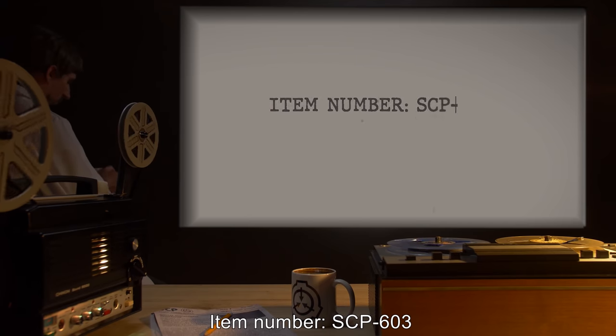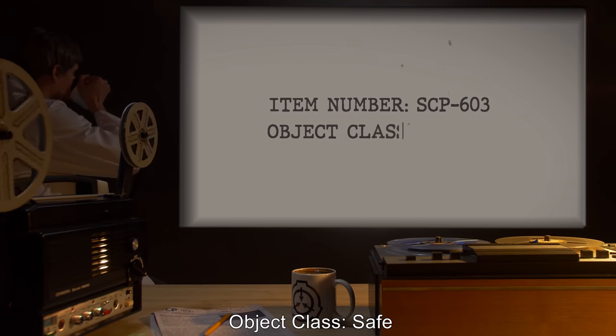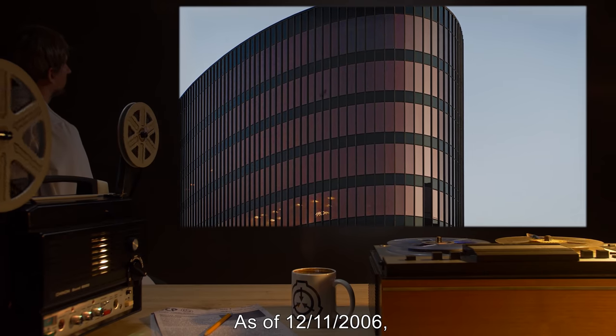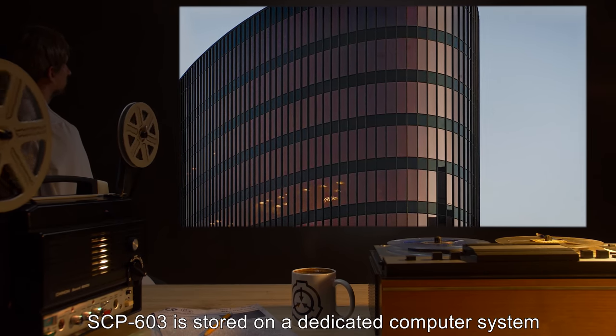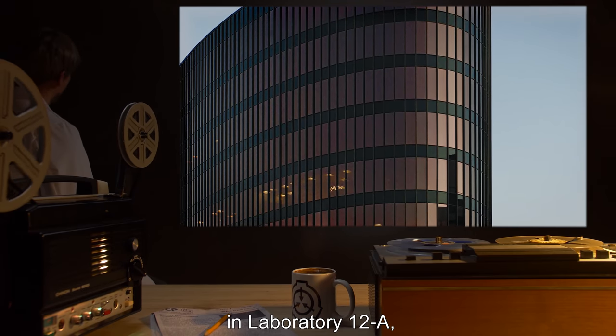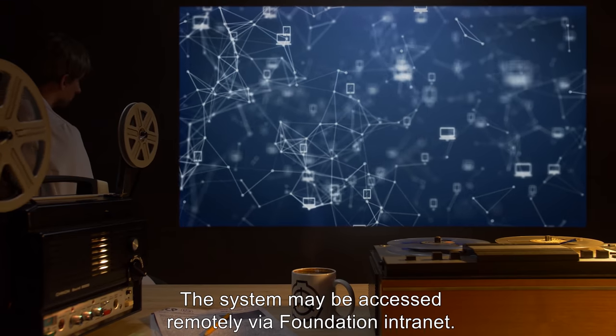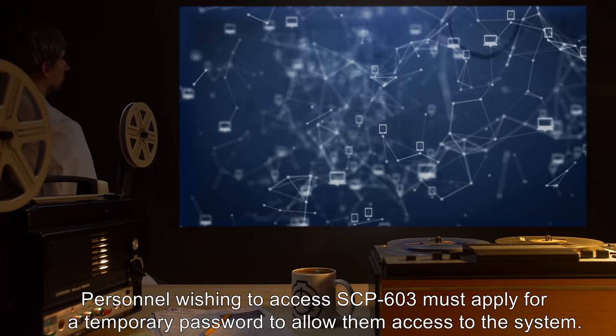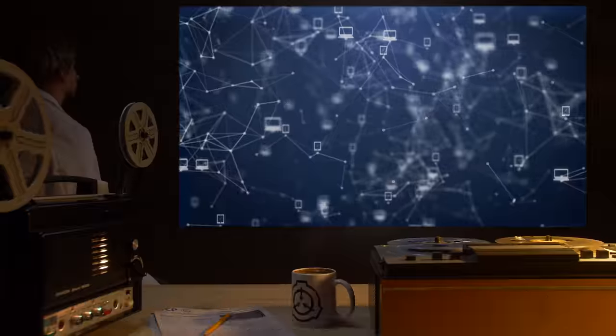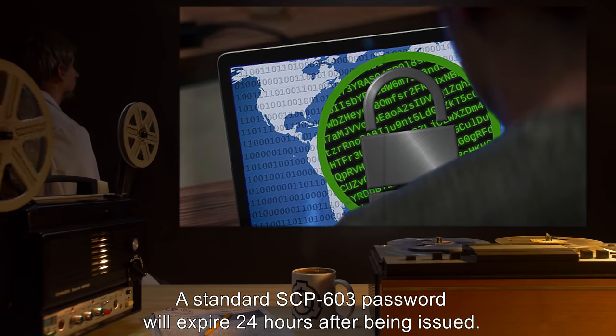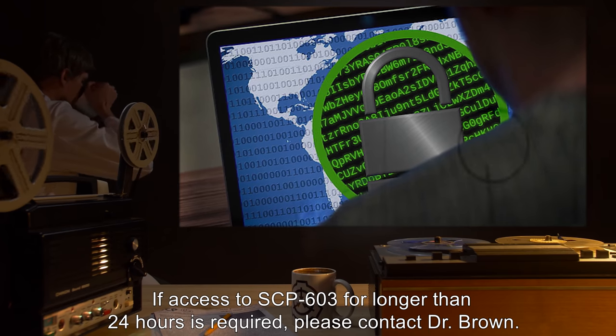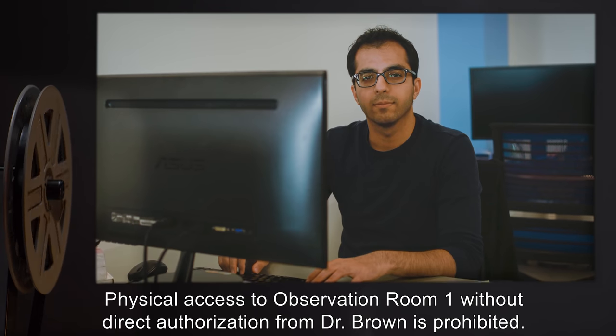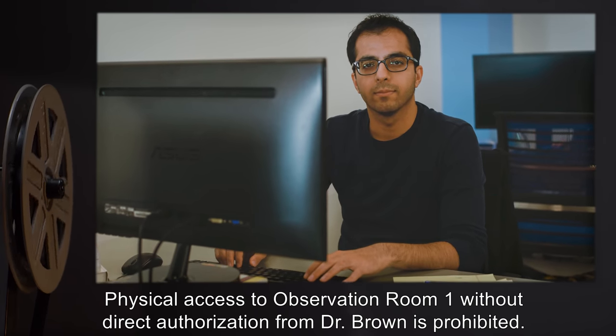Item Number SCP-603. Object Class: Safe. Special Containment Procedures: As of 12-11-2006, SCP-603 is stored on a dedicated computer system in Laboratory 12A, Observation Room 1. The system may be accessed remotely via Foundation intranet. Personnel wishing to access SCP-603 must apply for a temporary password. A standard SCP-603 password will expire 24 hours after being issued. Physical access to Observation Room 1 without direct authorization from Dr. Brown is prohibited.